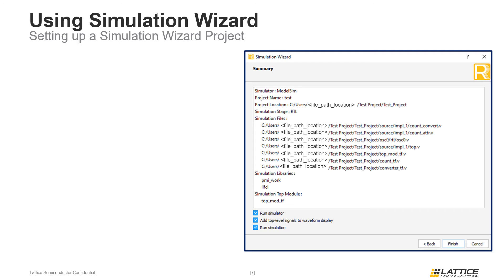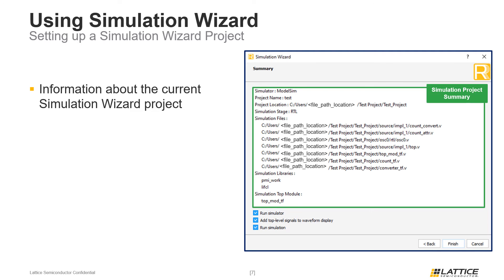The final page of the Simulation Wizard window contains two sections. The top section is a summary of all the selections made in the previous Simulation Wizard pages. Before finishing the setup, users should review this information to ensure everything is correct. If a mistake is found, the Back button at the bottom of the window can be used to go back and correct the issue.